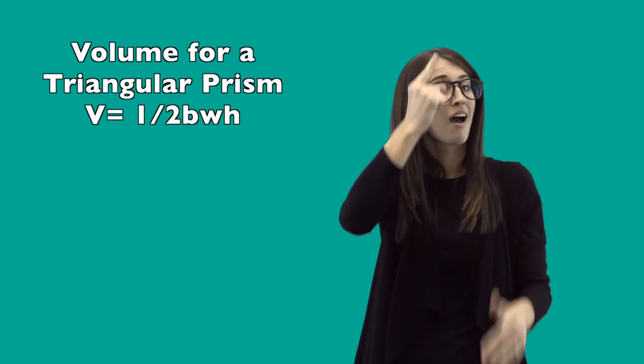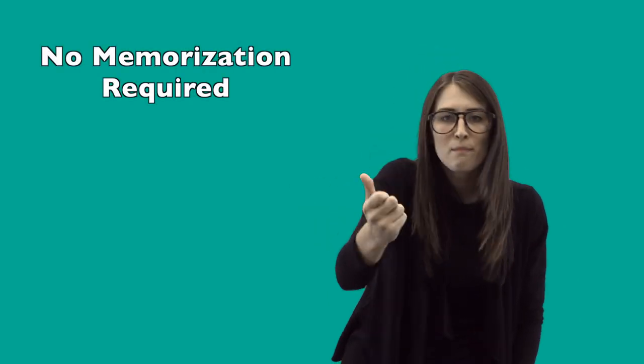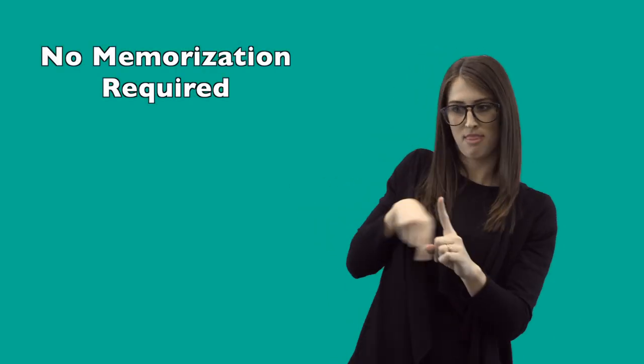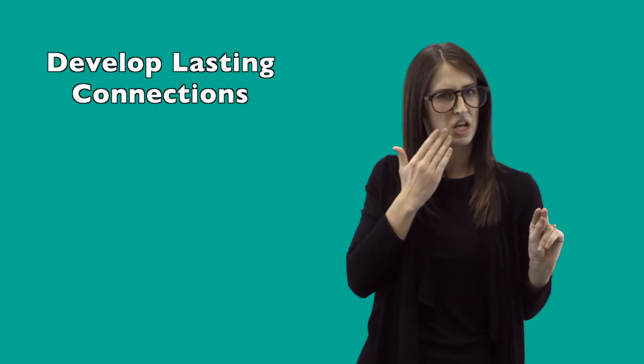They start to make connections. Now they look at the formula for triangular prisms. V equals one-half times B times W times H. They make the connection between filling up the rectangular prism using the triangular prism, because it's actually half of the rectangular prism. The students figured it out themselves. They don't have to memorize the formula. The activity helps to develop a lasting connection. In the future, they will remember the formula from the experience.